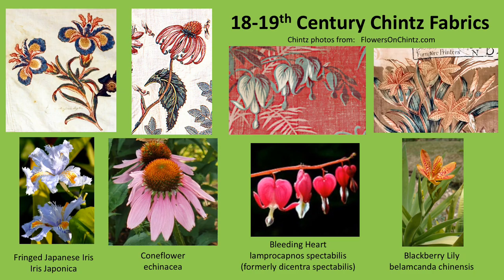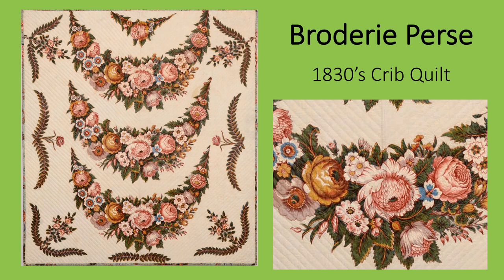Including large floral images in fabric is nothing new. Across the top of the screen are 18th and 19th century chintz fabrics that clearly represented specific blooms. I was lucky to find examples of some of my favorite flowers: the iris, the coneflower, the bleeding heart, and the blackberry lily. These fabrics, initially imported from India, were especially popular for quilts in the late 18th and 19th centuries. Quilters would often cut out the specific images and stitch them to a background — the technique was called broderie perse.